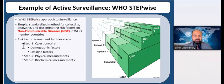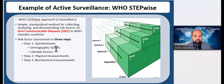WHO STEPwise has three steps: Step one is the questionnaire, which aims at demographic and lifestyle factors. Step two is the physical measurement. Step three is the biochemical measurements.